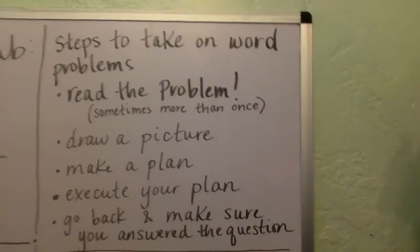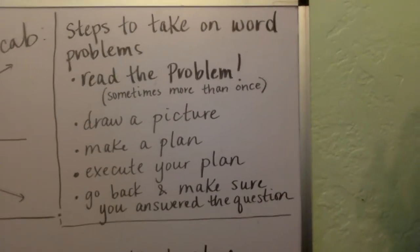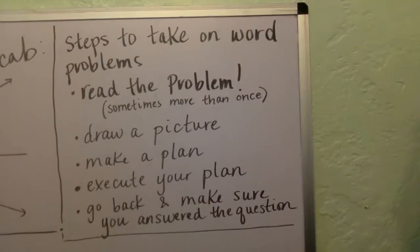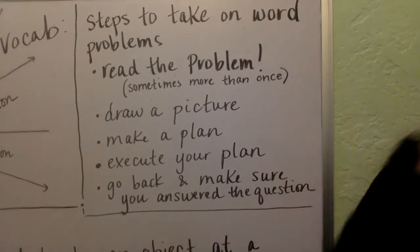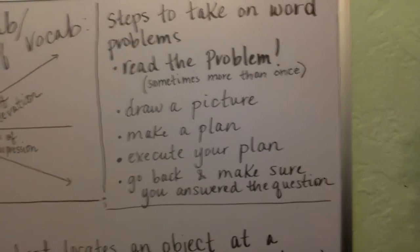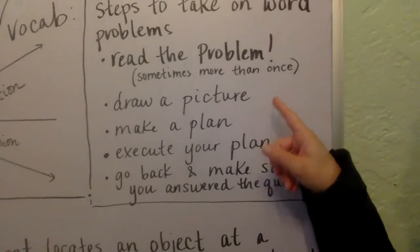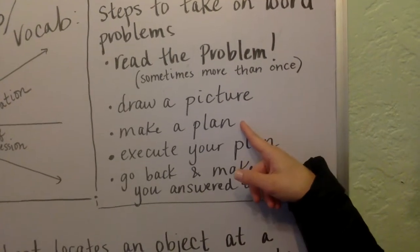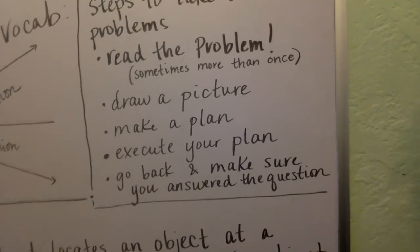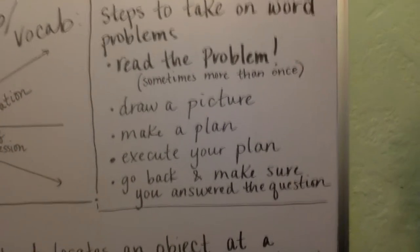We're going to start doing word problems with our trig functions. You may remember this from geometry. Here are some steps to keep in mind: read the problem - sometimes it takes two or three times to get it figured out. Draw a picture. Make a plan. Execute your plan. Then go back and make sure that you answered the question.